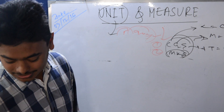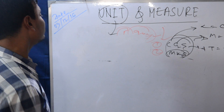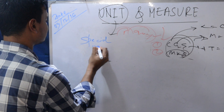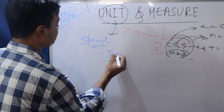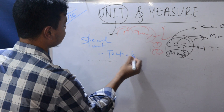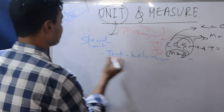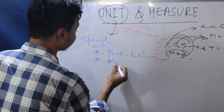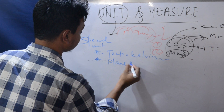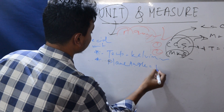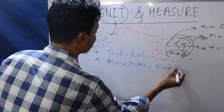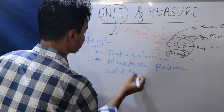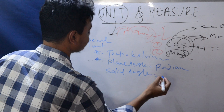The supplementary SI units: temperature is measured in Kelvin. Plain angle is measured in radian. Solid angle is measured in steradian.